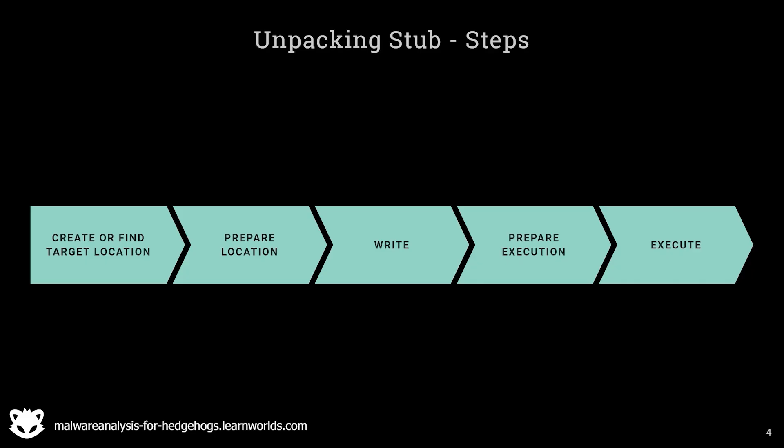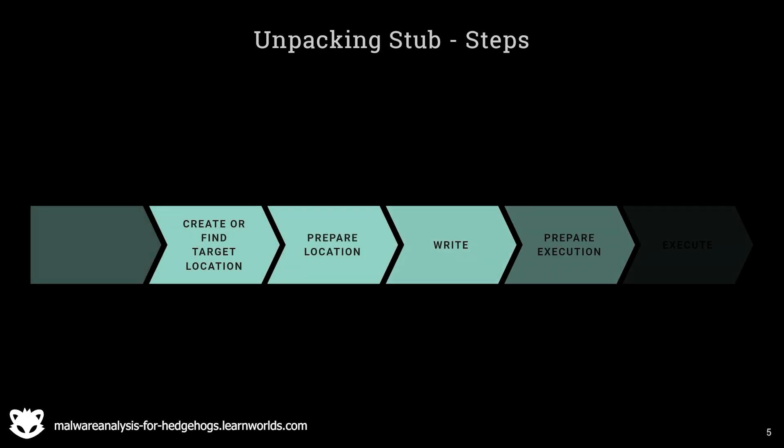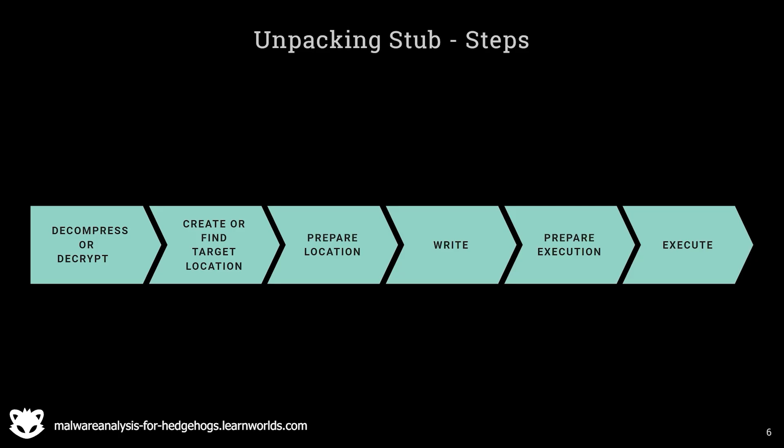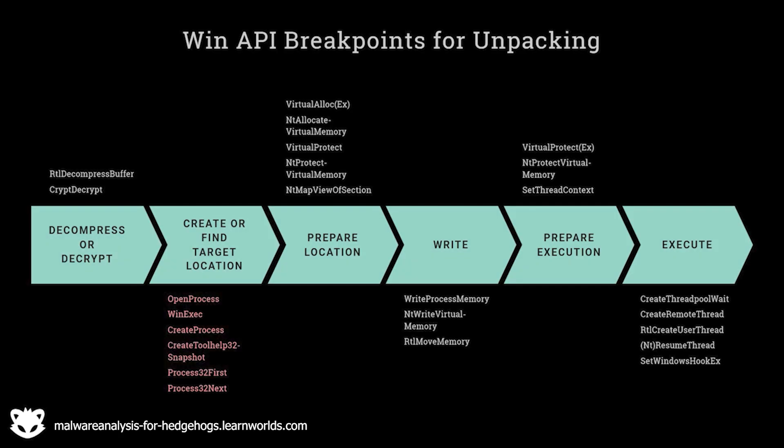For the purpose of unpacking, I would like to prepend another step: the decompression or decryption step. Here are the Windows API breakpoints that we may use for unpacking, except for the red ones. The white ones are breakpoints you can set to dump or obtain the unpacked target data. The red ones are good indicators of which stage of the unpacking process you are currently at. This list is not complete but covers the most important ones.